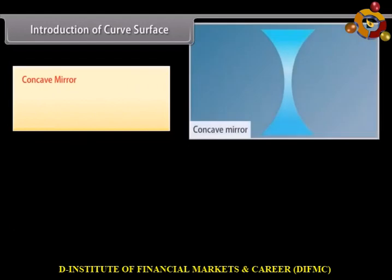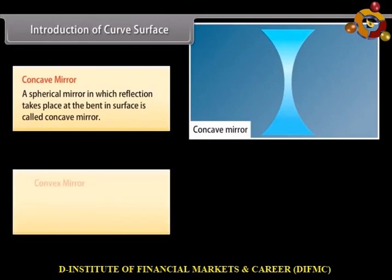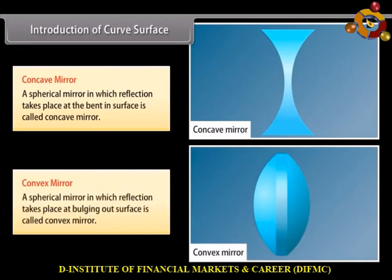Concave mirror: A spherical mirror in which reflection takes place at the bent-in surface is called a concave mirror. Convex mirror: A spherical mirror in which reflection takes place at the bulging-out surface is called a convex mirror.